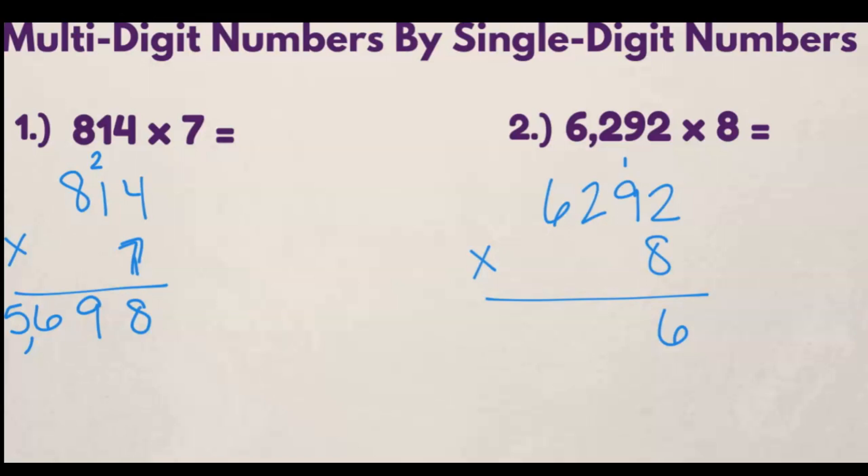8 times 9 is 72, plus one more is 73. So the 3 goes down below, we carry the 7.